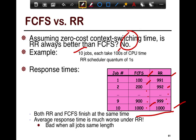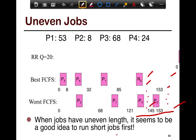But if you look at the average response time, with FCFS it's 100 plus 200, so on and so forth, divided by 10. While with round-robin, it's 991 plus 992, so on and so forth, divided by 10. And so the average is much higher with round-robin.